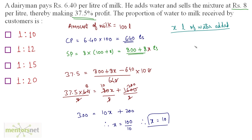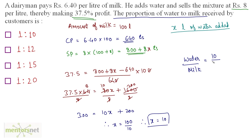The amount of water added is 10 liters. We are asked for the proportion of water to milk: water is 10 liters and milk is 100 liters, so 10 by 100 equals 1 by 10. So the proportion of water to milk is 1:10, and option A is the correct answer.